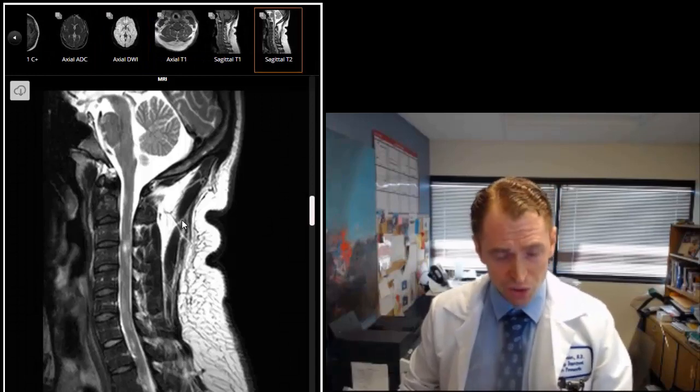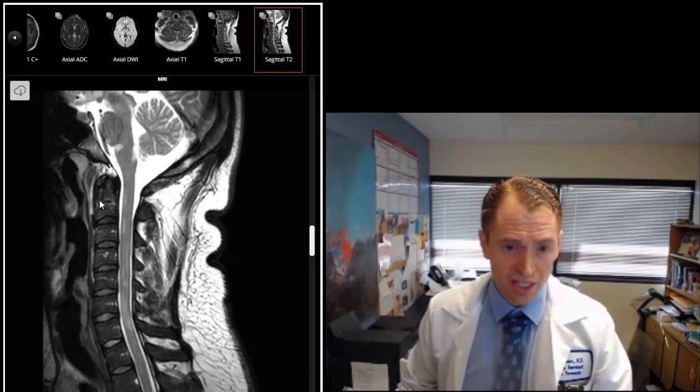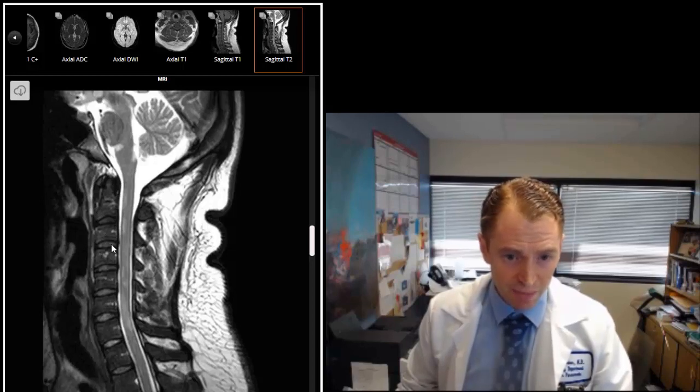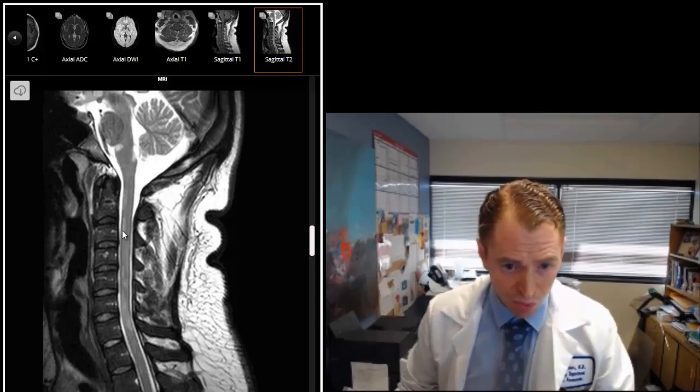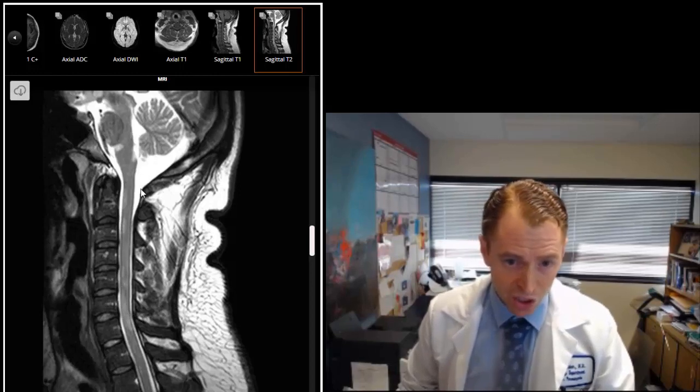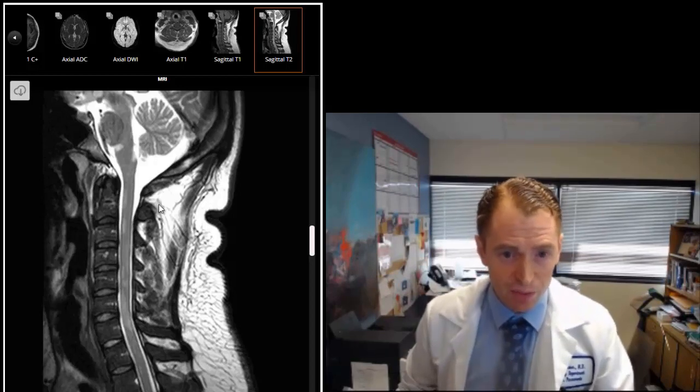This is a T2 sagittal image of the cervical spine. You can see the bones, the vertebrae. This is C2 and C1. These are the discs in between the vertebrae. The spinal cord is normally dark on T2, but you can see these bright areas which are the multiple sclerosis lesions. There's this normal brightness of cerebrospinal fluid. The type of fluid we're extracting during the spinal tap around the spinal cord.